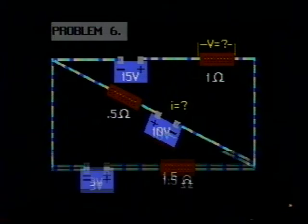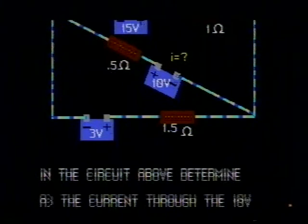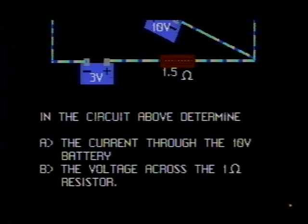Problem 6. Let's read the problem first. In the circuit above, determine A, the current through the 10-volt battery, and B, the voltage across the 1-ohm resistor.